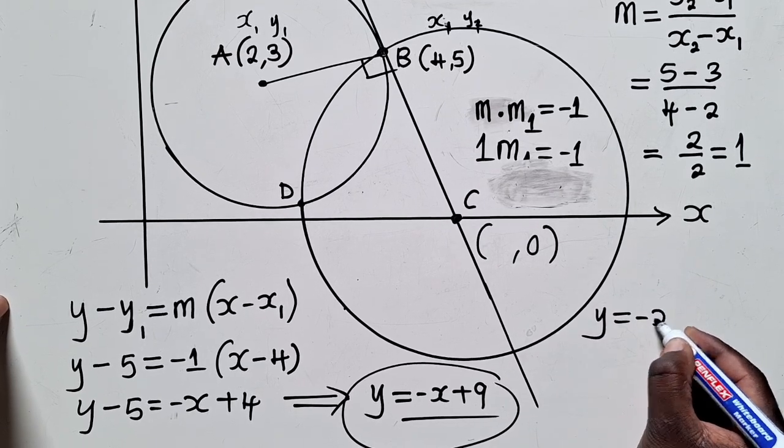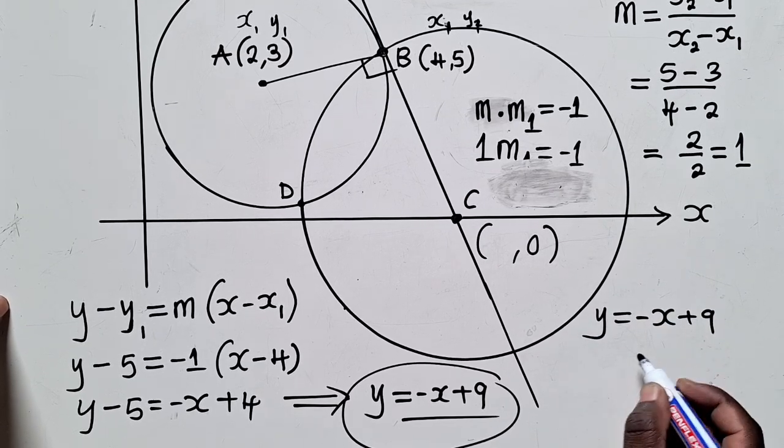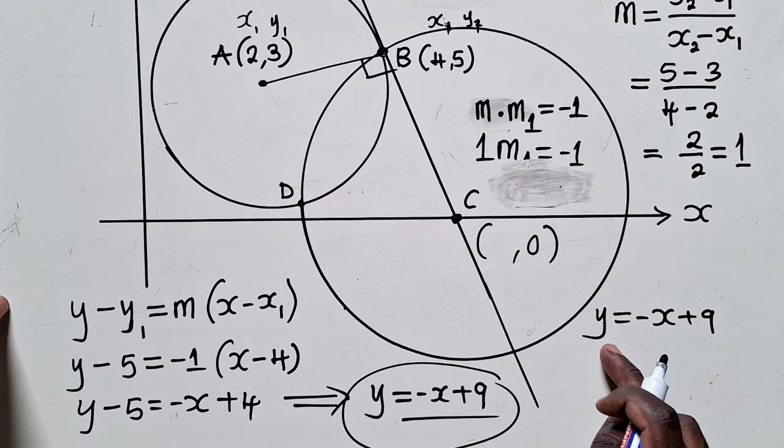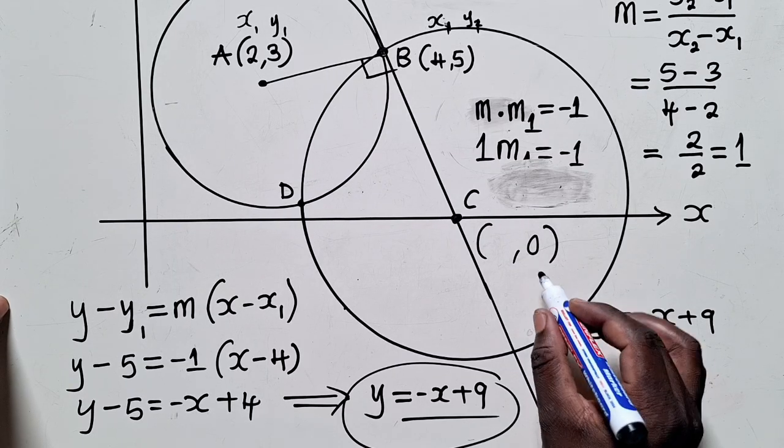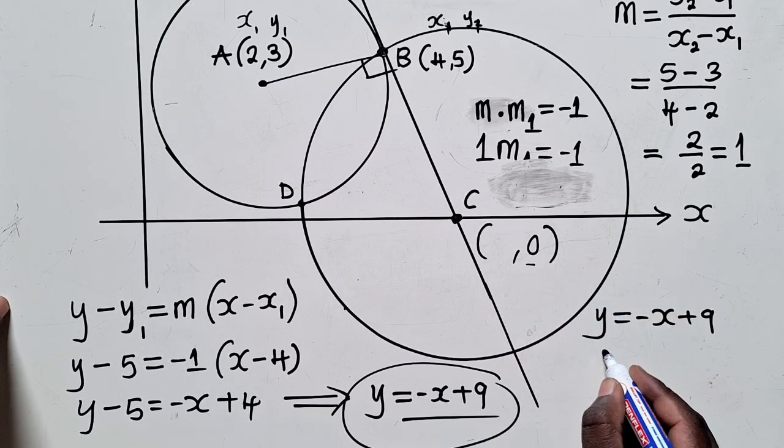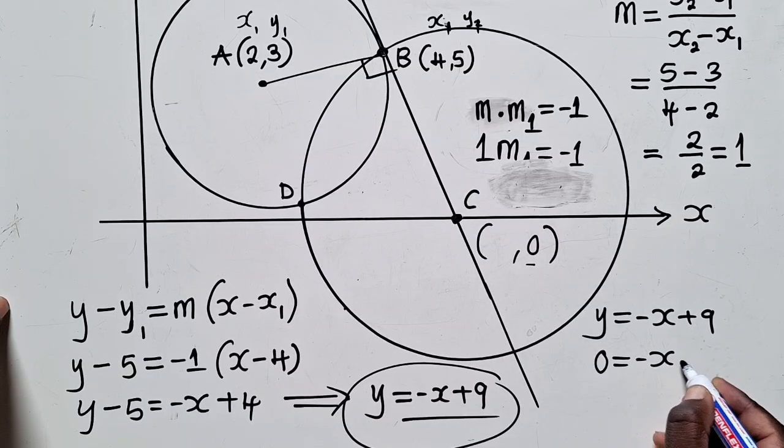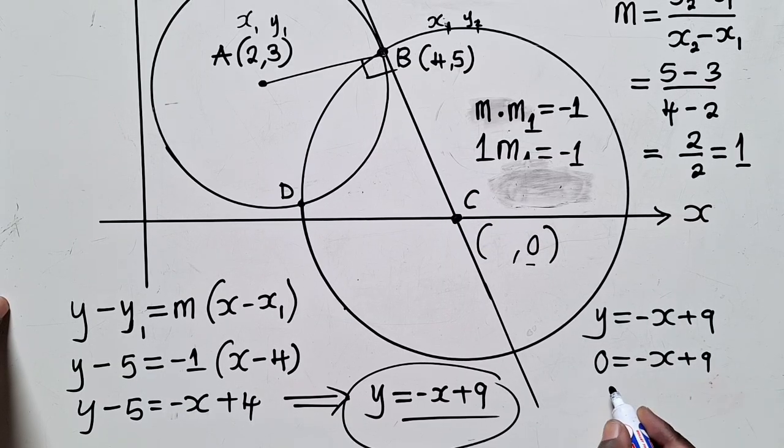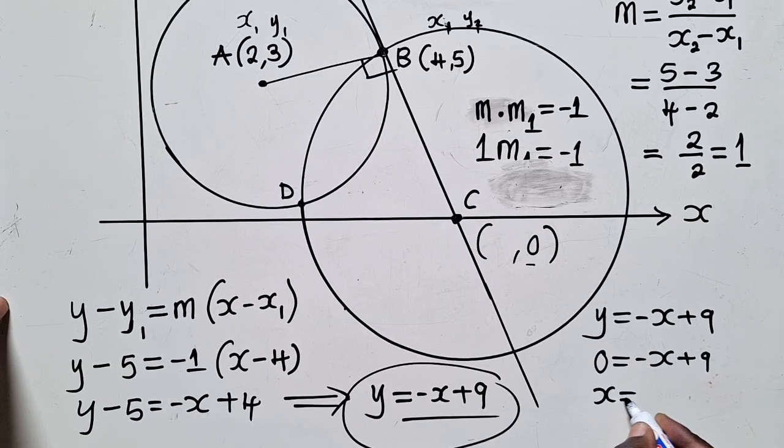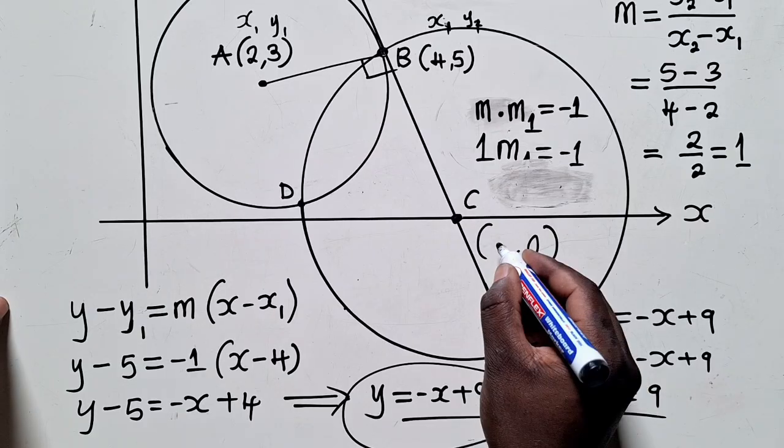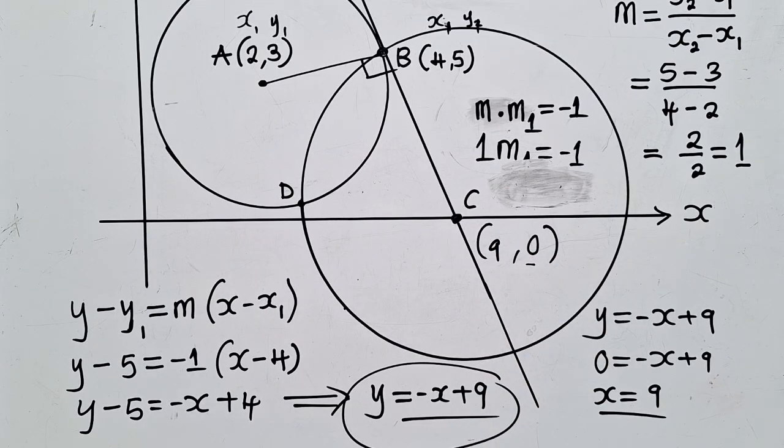Where there is Y, you put 0, because we know that Y-coordinate is 0. So this will be 0 equal to negative X plus 9. So for X, this will just be equal to 9. So the X-coordinate here is 9. We can say the point here is (9, 0).